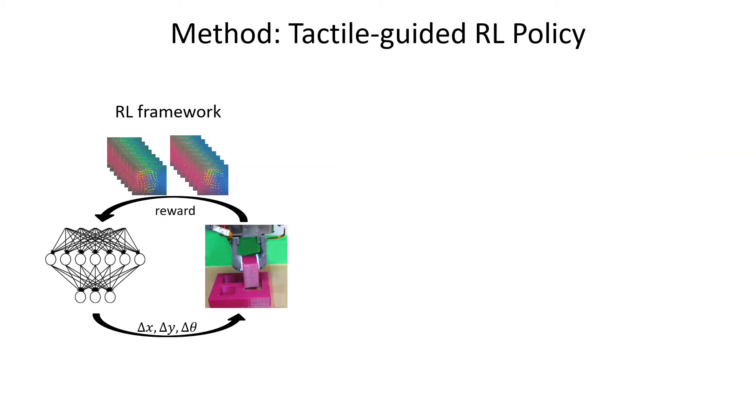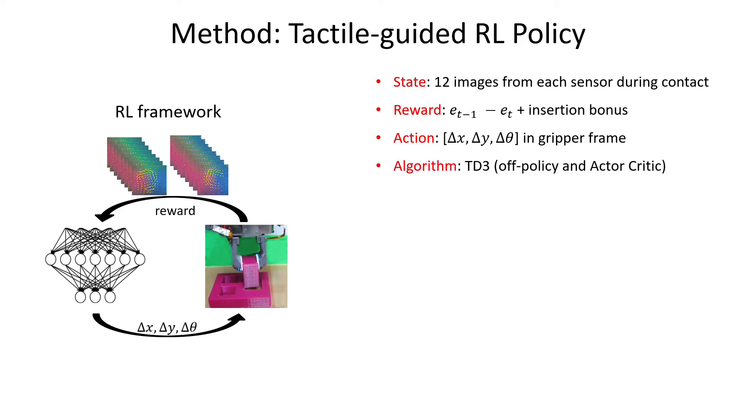We use tactile image sequence during the contact as the state of the RL policy, and the improvement in the misalignment between the object and the hole, and the insertion bonus as the reward. The action is the robot motion in x, y, and yaw axis in the gripper frame. We use TD3 algorithm, which is off-policy and actor-critic.